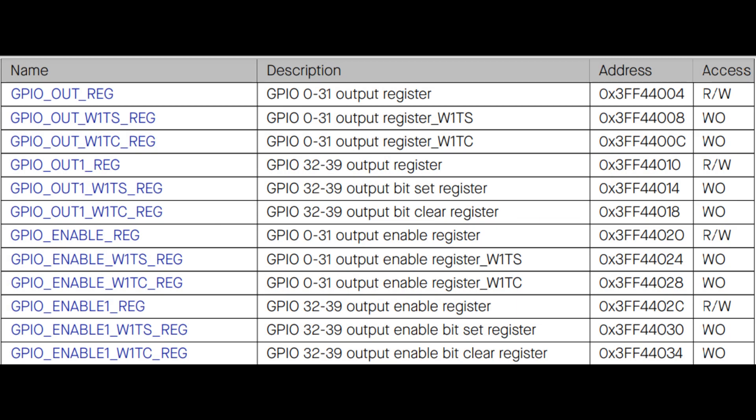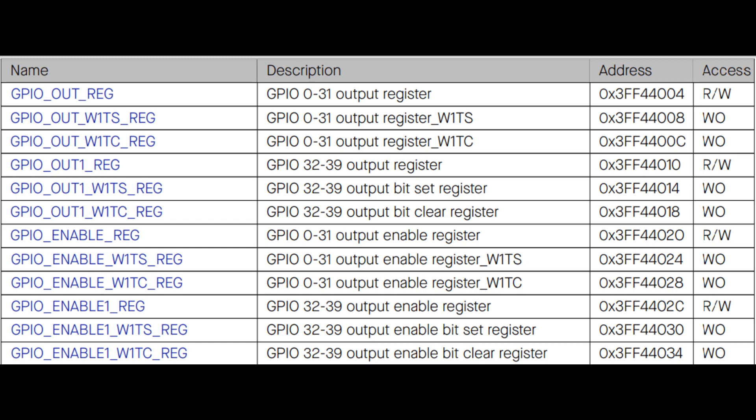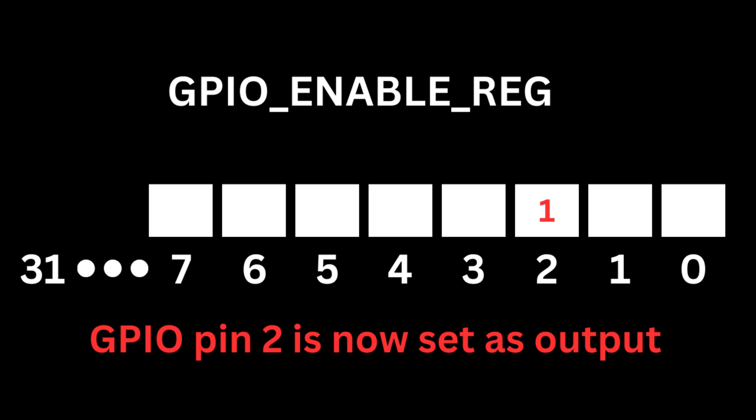So if we want to turn on two LEDs connected at GPIO 2 and 3, we must make the third and fourth bits in this register high. In this video we will be using just two registers to blink an LED. The first one will be the GPIO out register and the other will be the GPIO output enable register. The GPIO enable register works the same as the GPIO out register, but the difference is this register is used to configure the GPIO pins as output, since a GPIO pin can be configured as both input as well as output.